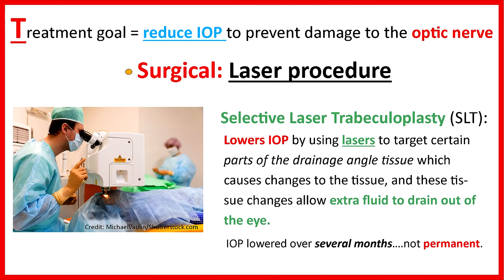A type of laser procedure that can be performed is called selective laser trabeculoplasty, also known as SLT. This procedure is relatively quick compared to traditional eye surgery. It lowers IOP by using lasers to target certain parts of the drainage angle tissue, causing changes to the tissue that allow extra aqueous fluid to drain out of the eye and decrease IOP. The IOP will be lowered over several months and it is not a permanent solution.